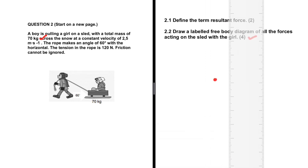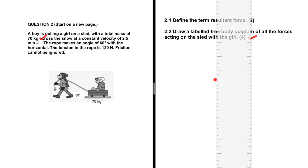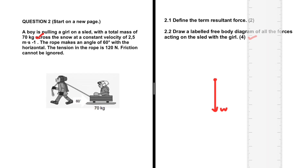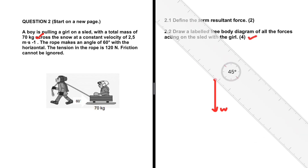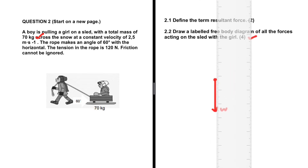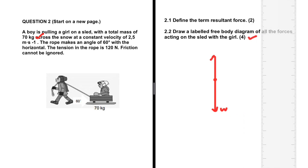Let's take a look at how the free body diagram will look. First things first, we need the weight because it is always there. They are resting on the snow, so because of that we're going to have a normal force as well.